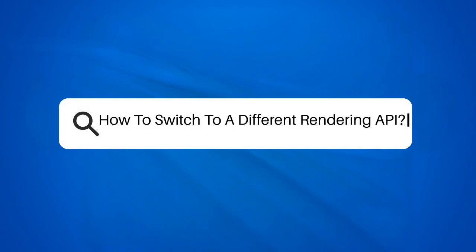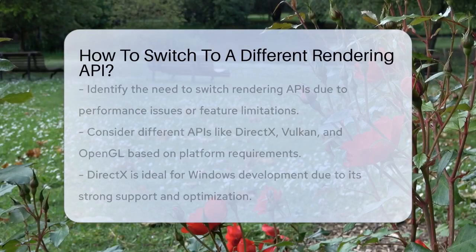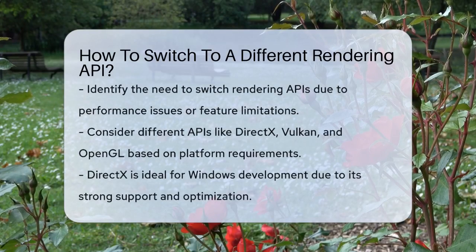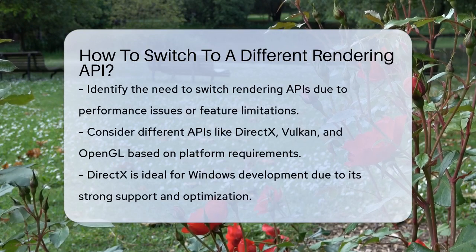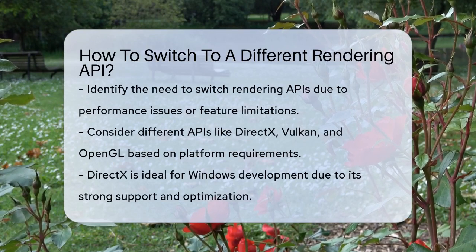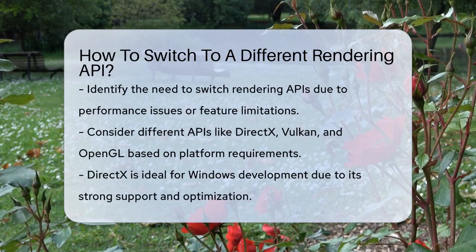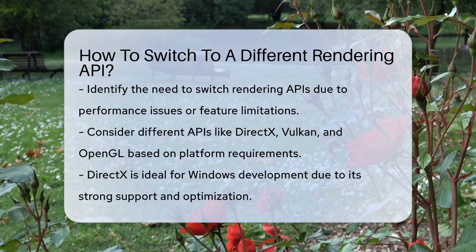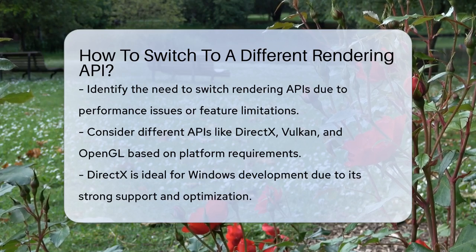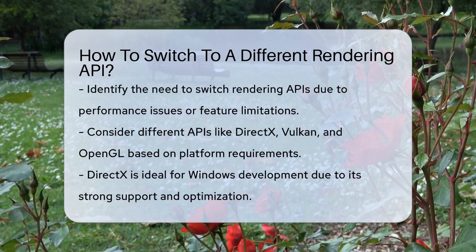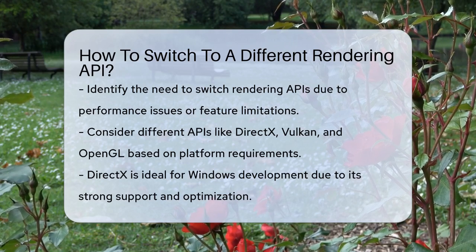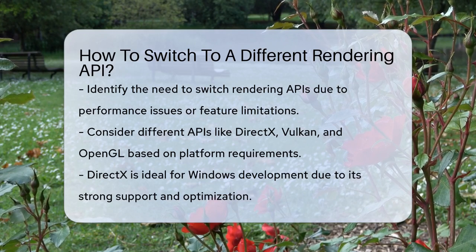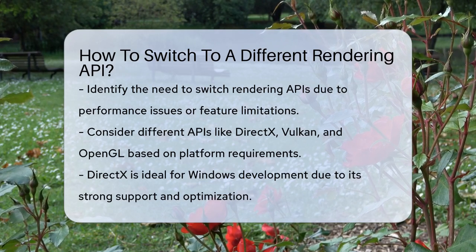How to switch to a different rendering API. Imagine you're working on a game or an application, and you realize that the current rendering API isn't quite cutting it. Maybe it's too slow, or it doesn't support the features you need. Switching to a different rendering API can be a game-changer. Different APIs like DirectX, Vulkan, and OpenGL have their own strengths and weaknesses.